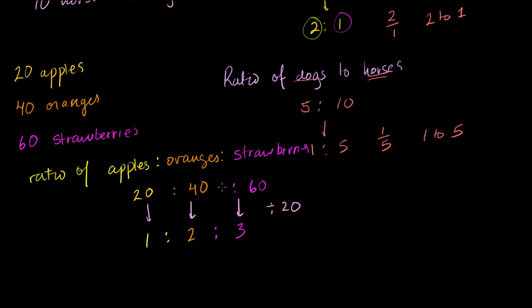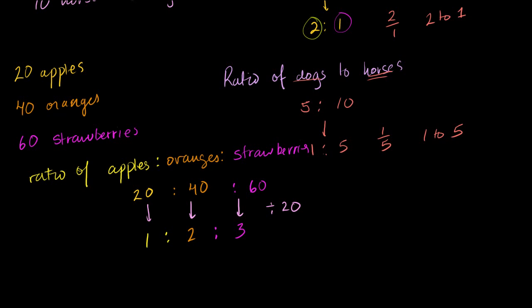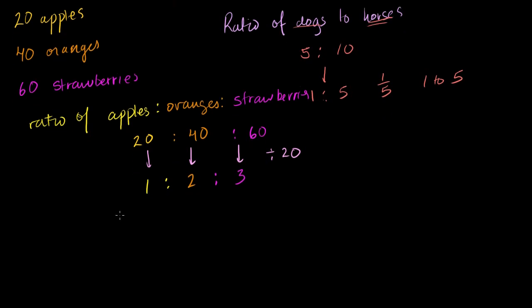The general idea is that whatever order someone asks you for the different items, the ratio will be in that same exact order. So if someone asked for the ratio of strawberries to oranges to apples, for every 3 strawberries I have 2 oranges and 1 apple — so it would be 3 to 2 to 1.